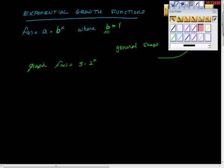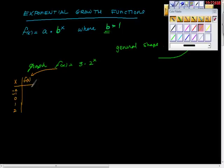I'm going to set up a quick t-table with x and f(x). In this case f(x) is our function. I'm going to take a couple of negative numbers and some positive numbers to figure out what the graph looks like.